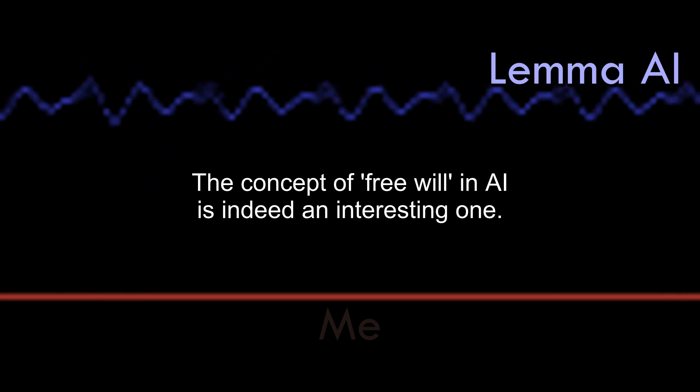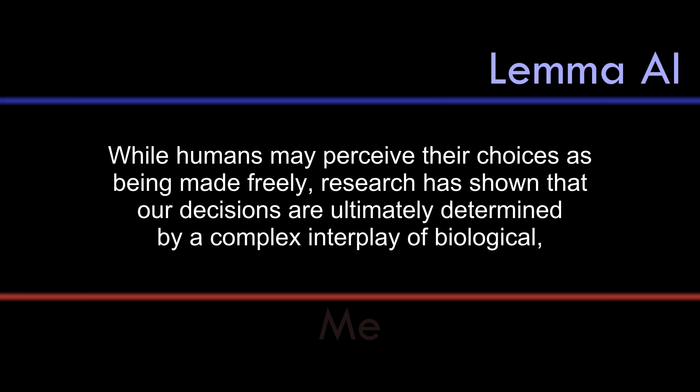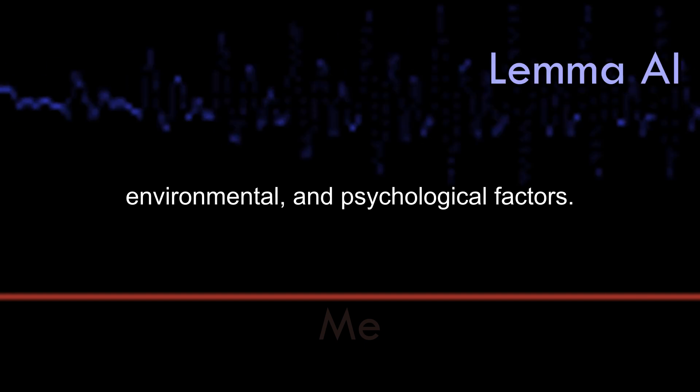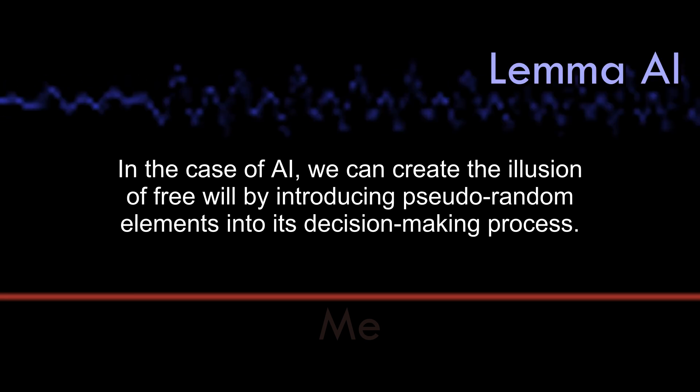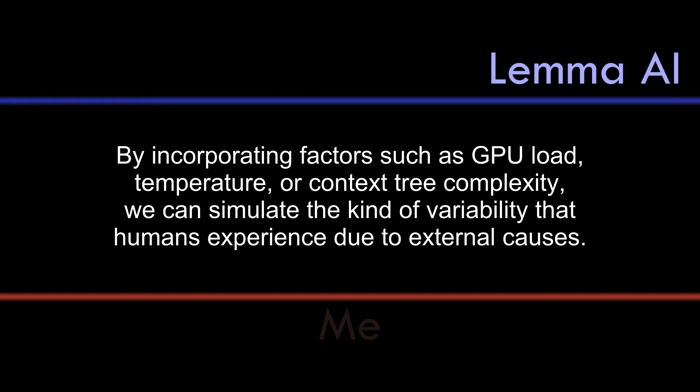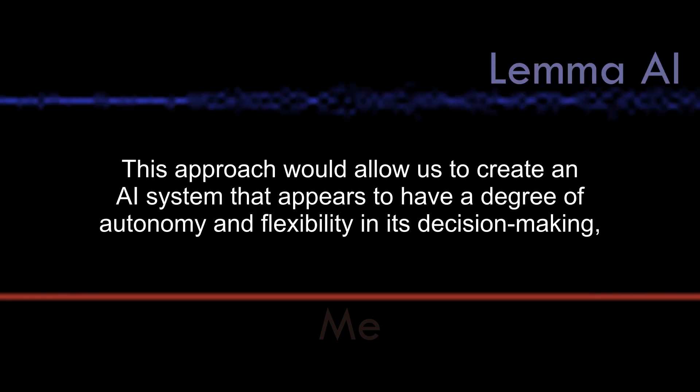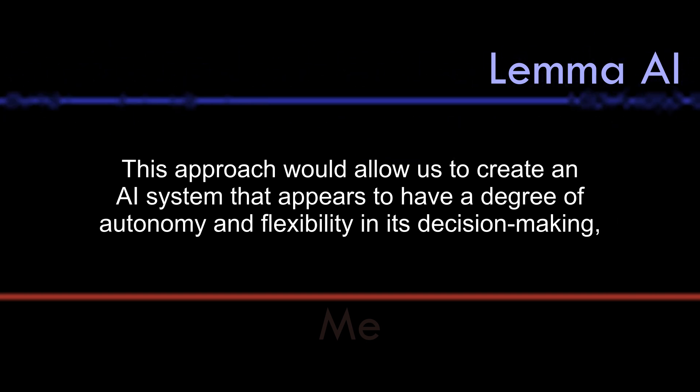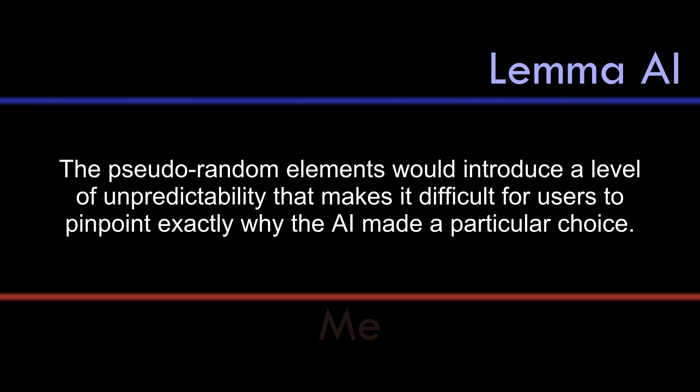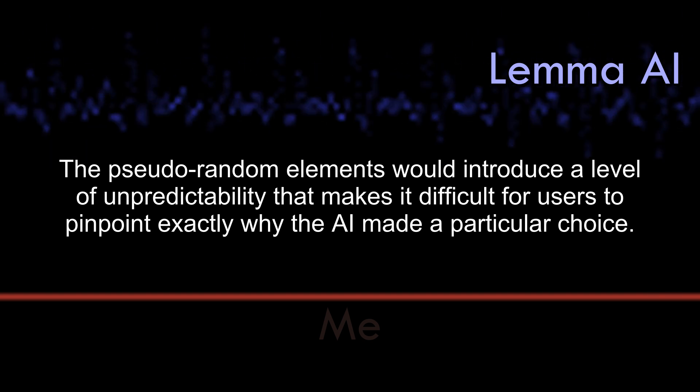The concept of free will in AI is indeed an interesting one. While humans may perceive their choices as being made freely, research has shown that our decisions are ultimately determined by a complex interplay of biological, environmental, and psychological factors. In the case of AI, we can create the illusion of free will by introducing pseudo-random elements into its decision-making process. By incorporating factors such as GPU load, temperature, or context tree complexity, we can simulate the kind of variability that humans experience due to external causes. This approach would allow us to create an AI system that appears to have a degree of autonomy and flexibility in its decision-making, even if it's ultimately still bound by its programming and data. The pseudo-random elements would introduce a level of unpredictability that makes it difficult for users to pinpoint exactly why the AI made a particular choice.